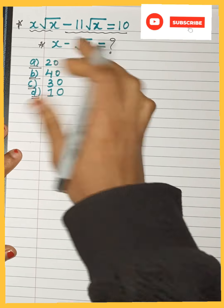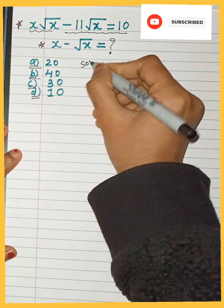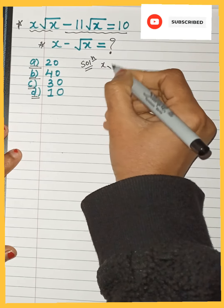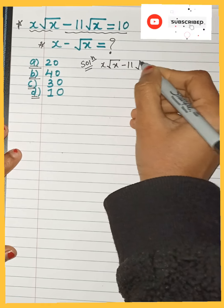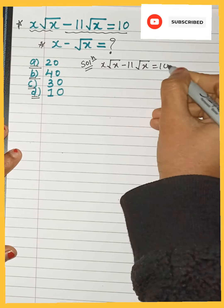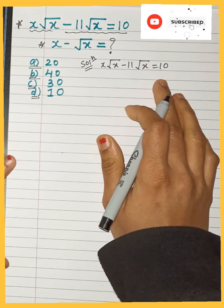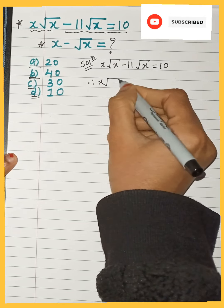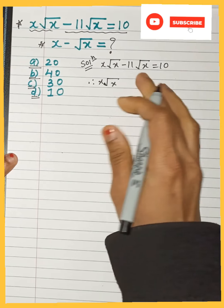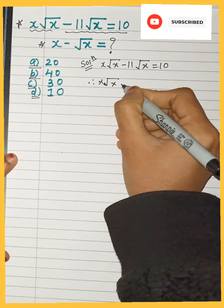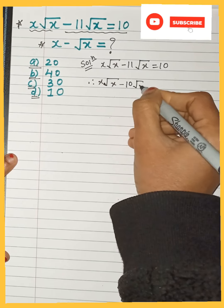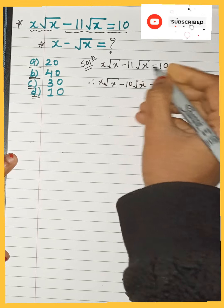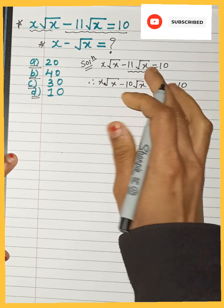Let's see how we will solve this type of question. The question is x√x − 11√x = 10. For simplifying this, we will first write 11√x as 10√x + √x, giving us x√x − 10√x − √x = 10.